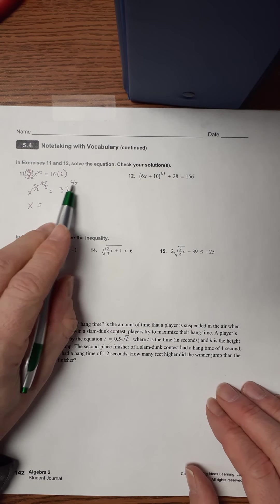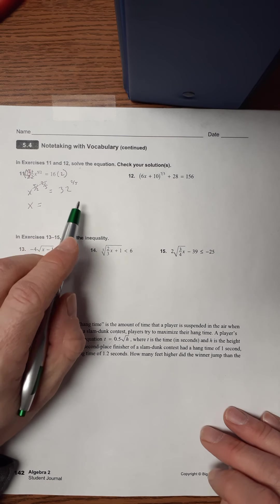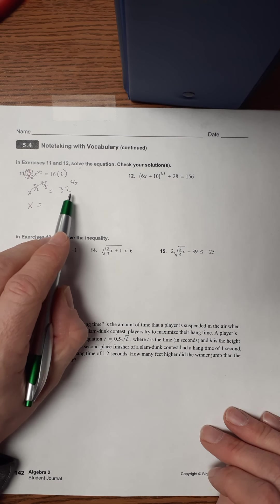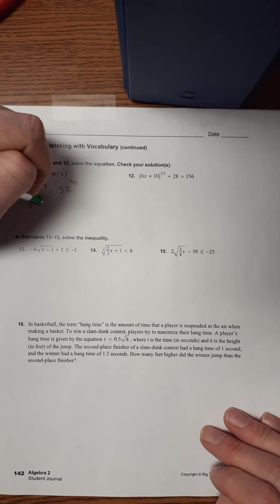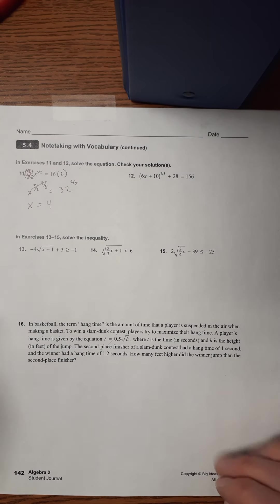Now over here, this is why we memorized those roots the other day. So the fifth root of 32, fifth root of 32 is 2, 2 squared is 4. So X equals 4 is our answer.